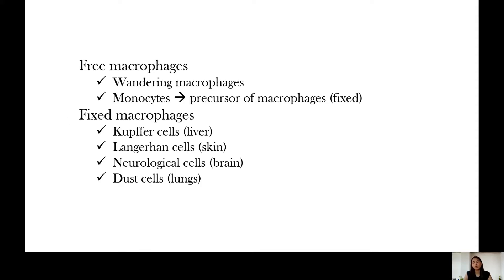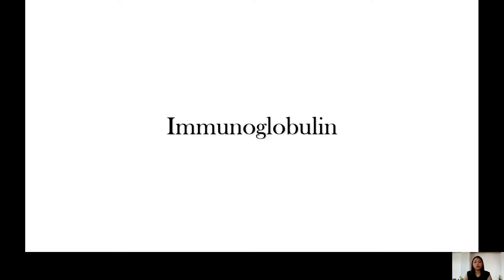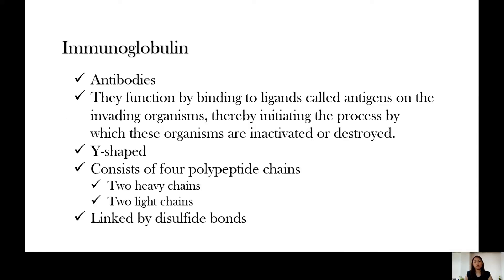Fixed macrophages can only be found in specific parts of the body and they stay in those specific parts. Fixed macrophages in the liver are called Kupffer cells, those in the skin are the Langerhans cells, those in the brain are the neurological cells, and those in the lungs are called dust cells.